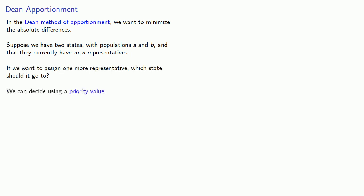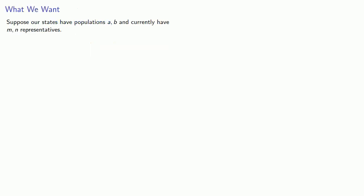We can decide using a priority value. We'll assume that the extra representative goes to the first state and see what that would require. Suppose our states have populations A and B and currently have M and N representatives. The values A/M and B/N are the number of persons per representative, and we want these values to be small.